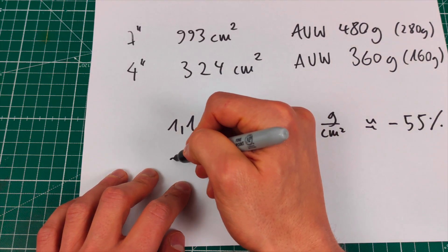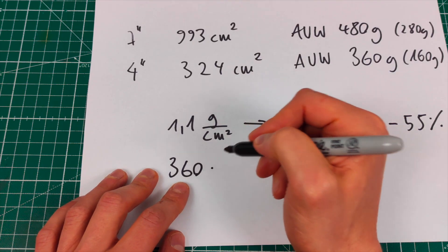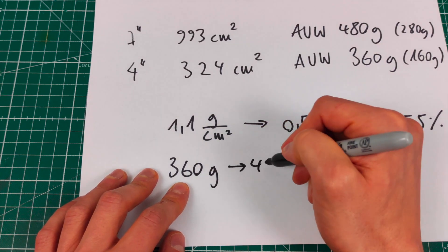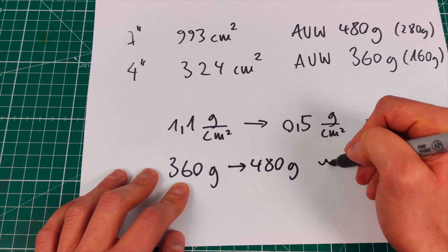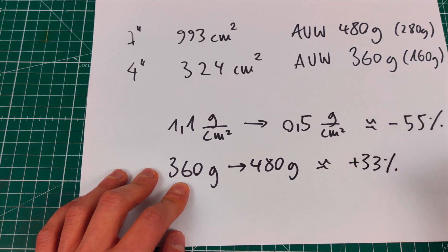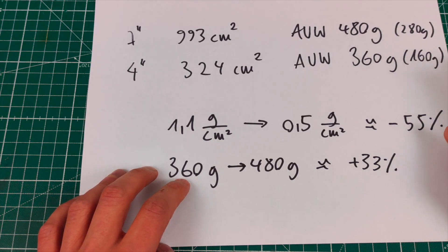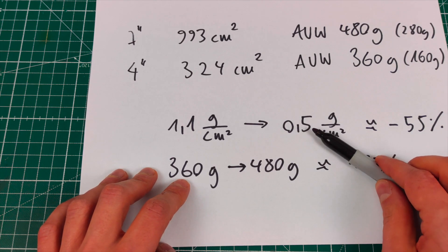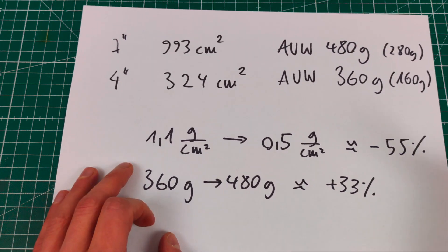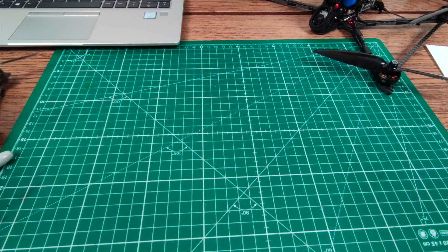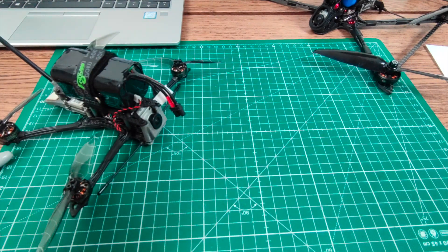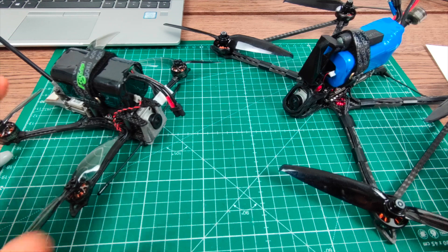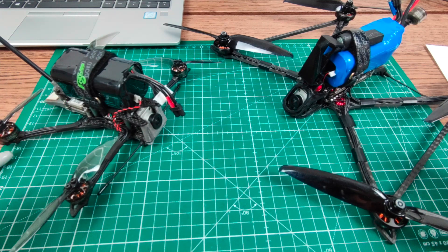Now compared to all-up weight, we have a disk load that is lower, but we also have to carry more weight. The increase in all-up weight from 360 to 480 grams is roughly plus 33%. So we have a drastically reduced disk load — the 7-inch has basically half the disk load — while being 33% heavier. That should mean we have much longer flight times on the 7-inch compared to the 4-inch, right? But actually, from the testing I did so far, I have to say it is not that obvious, at least when using the same battery.